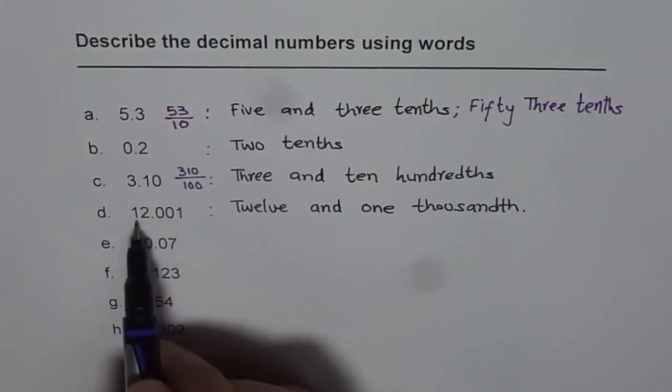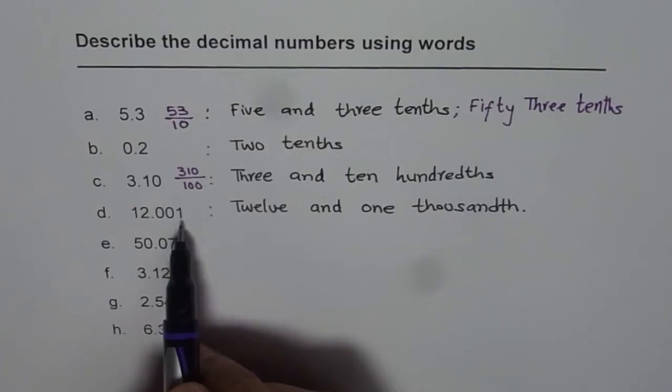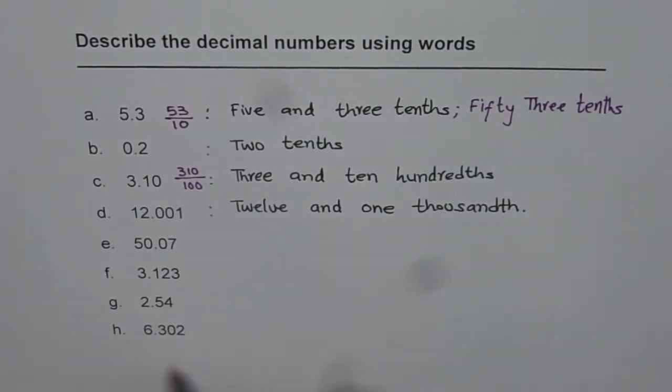Similarly, I can write this as 12,001 thousandths. So like this, we can actually rewrite these numbers in different ways.